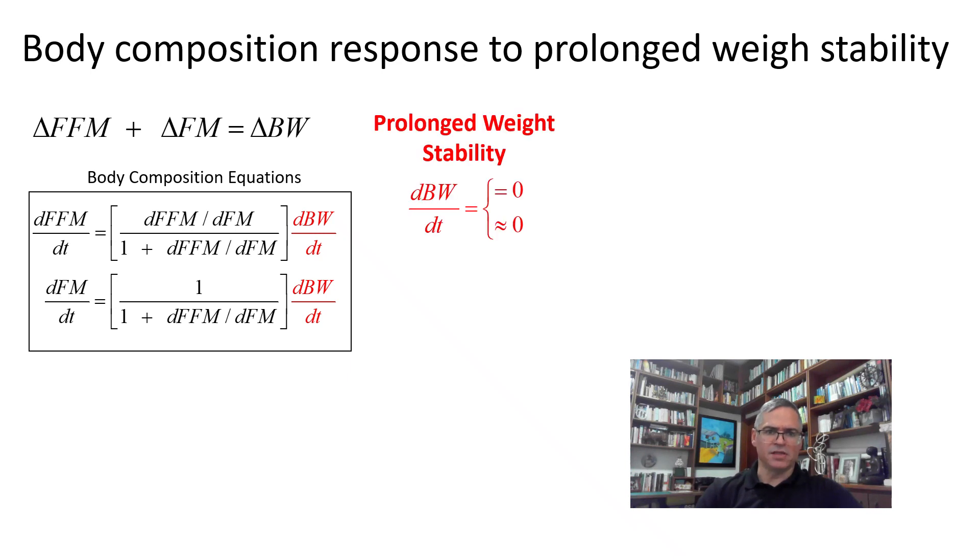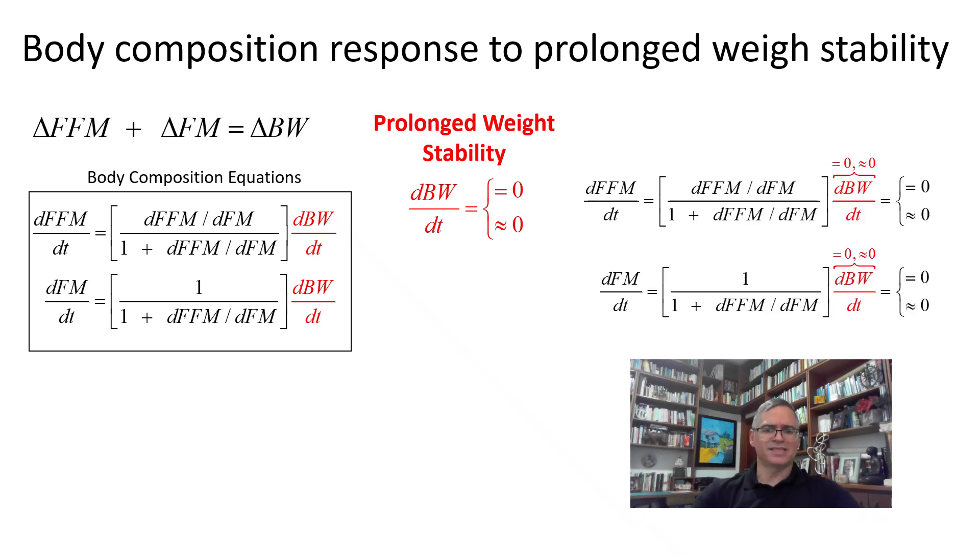Prolonged body weight stability occurs when the body weight time derivative is either 0, like in the ideal case, or as it oscillates very close to 0, as in the non-ideal case. Thus, by setting the body weight time derivative to 0 or to about 0 in the body composition equations, it becomes immediately clear that as body weights remain stable, fat-free mass and fat mass are also stable.